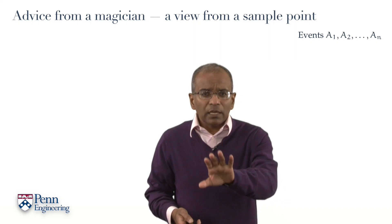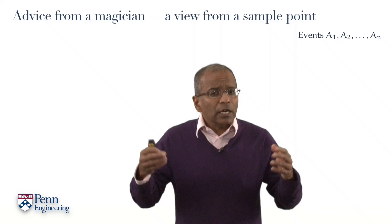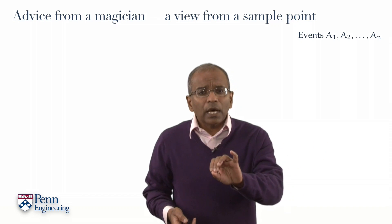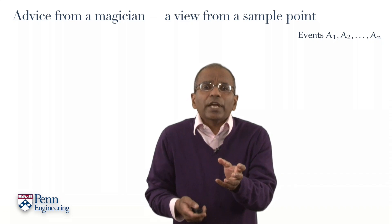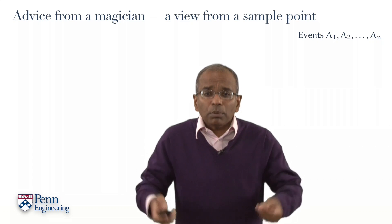So let's begin with a collection of n events, A1 through An, in some probability space. We will not worry now about whether there are any dependency constraints between these events or not. It does not matter. For our purposes, these are arbitrary events in a probability space.